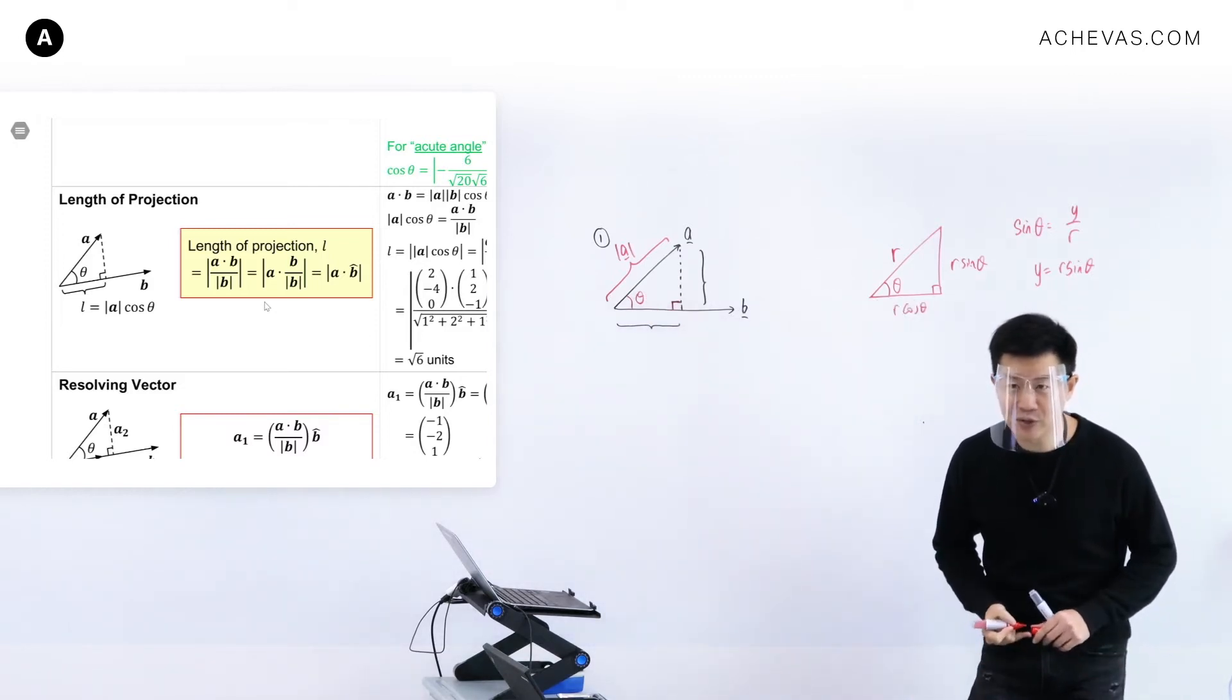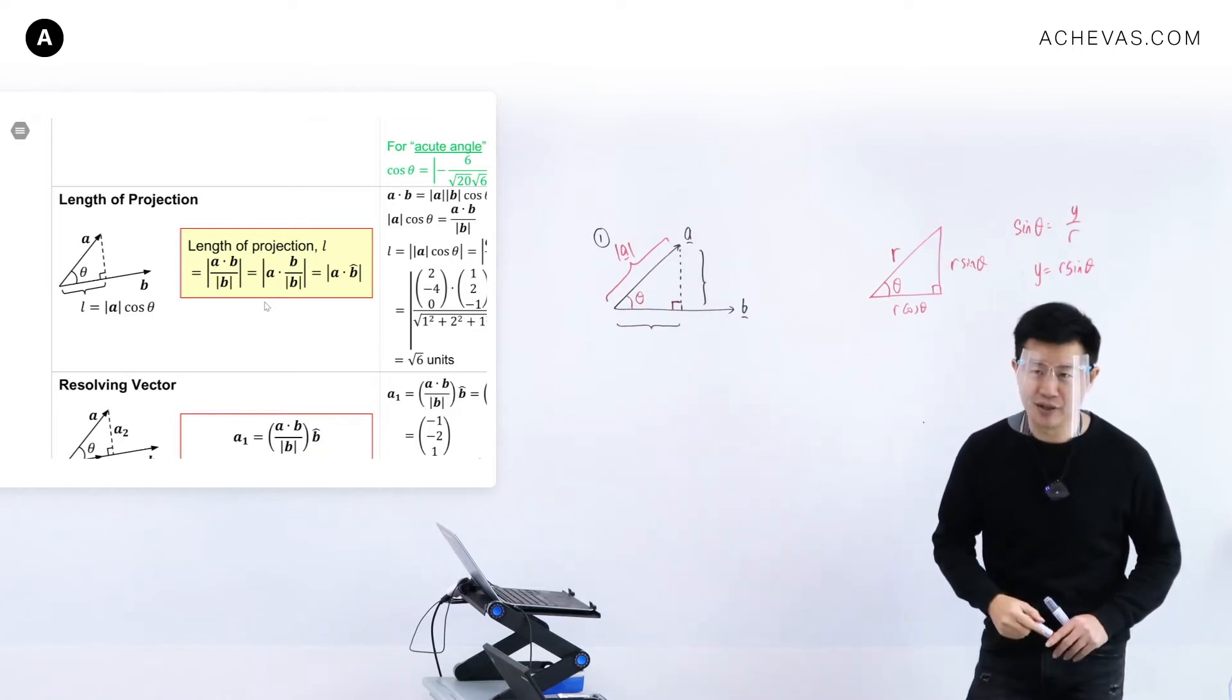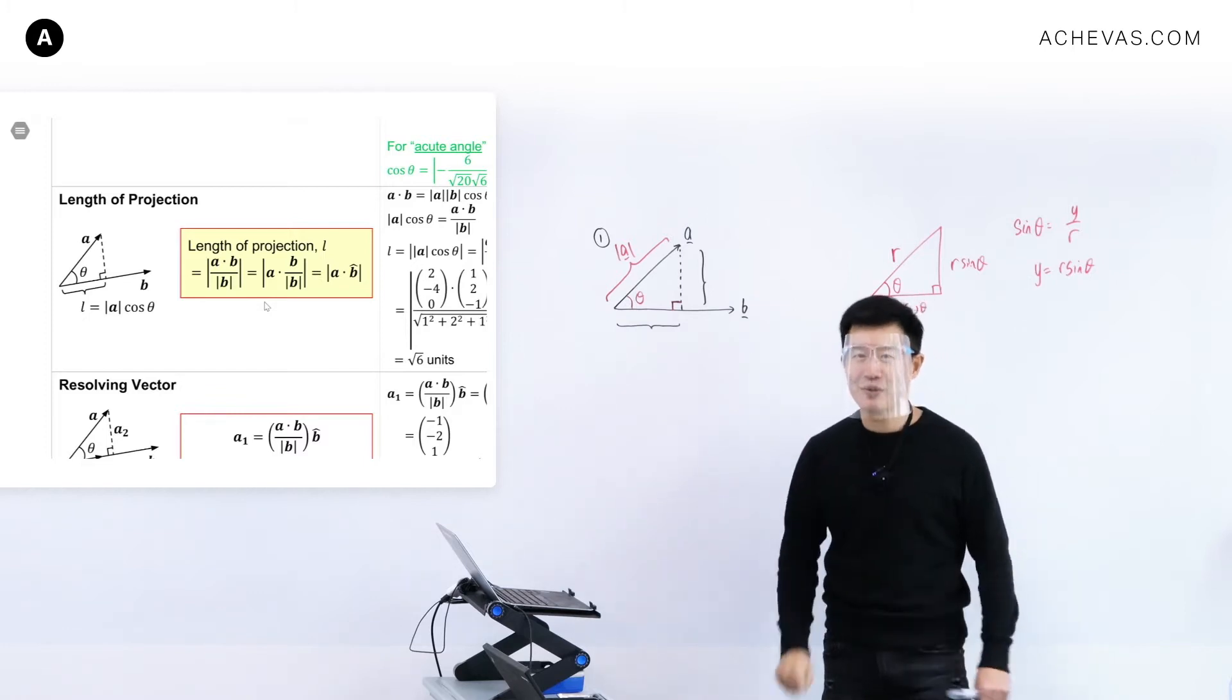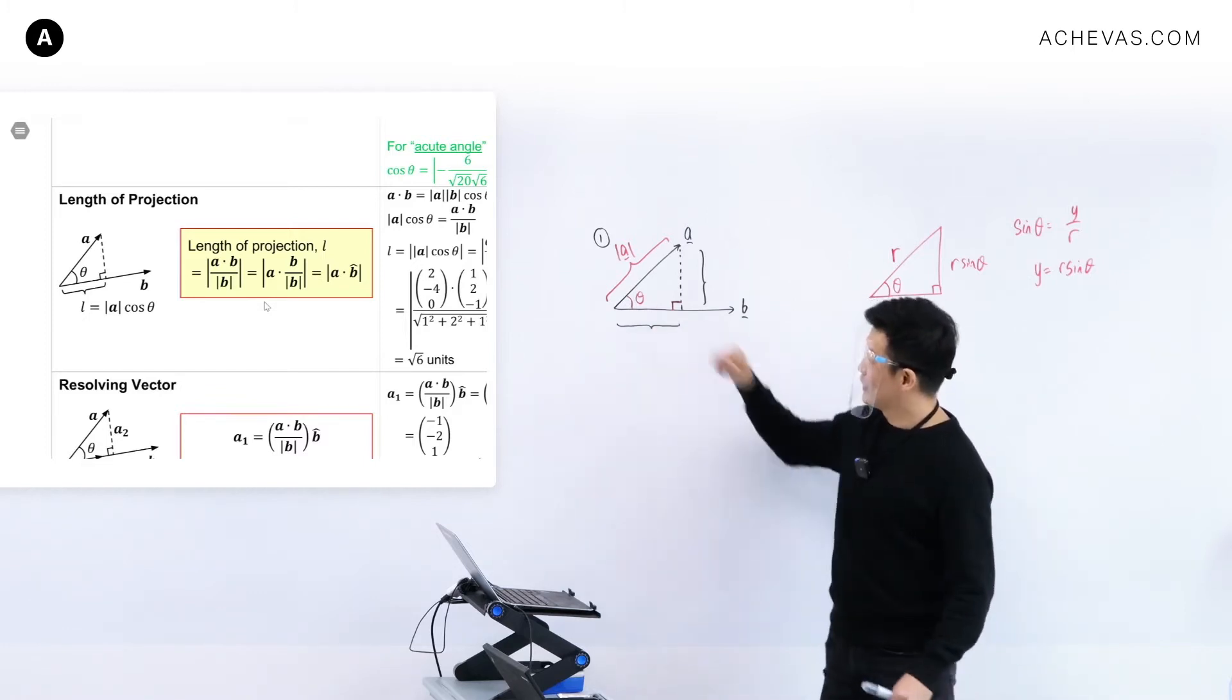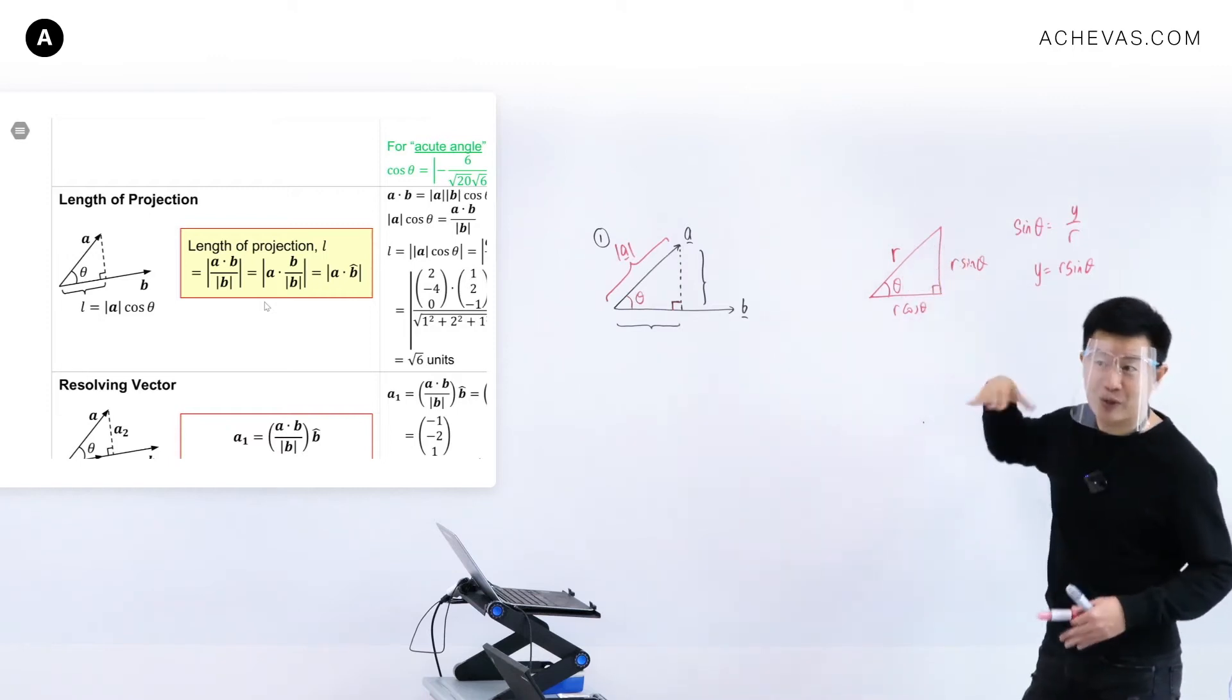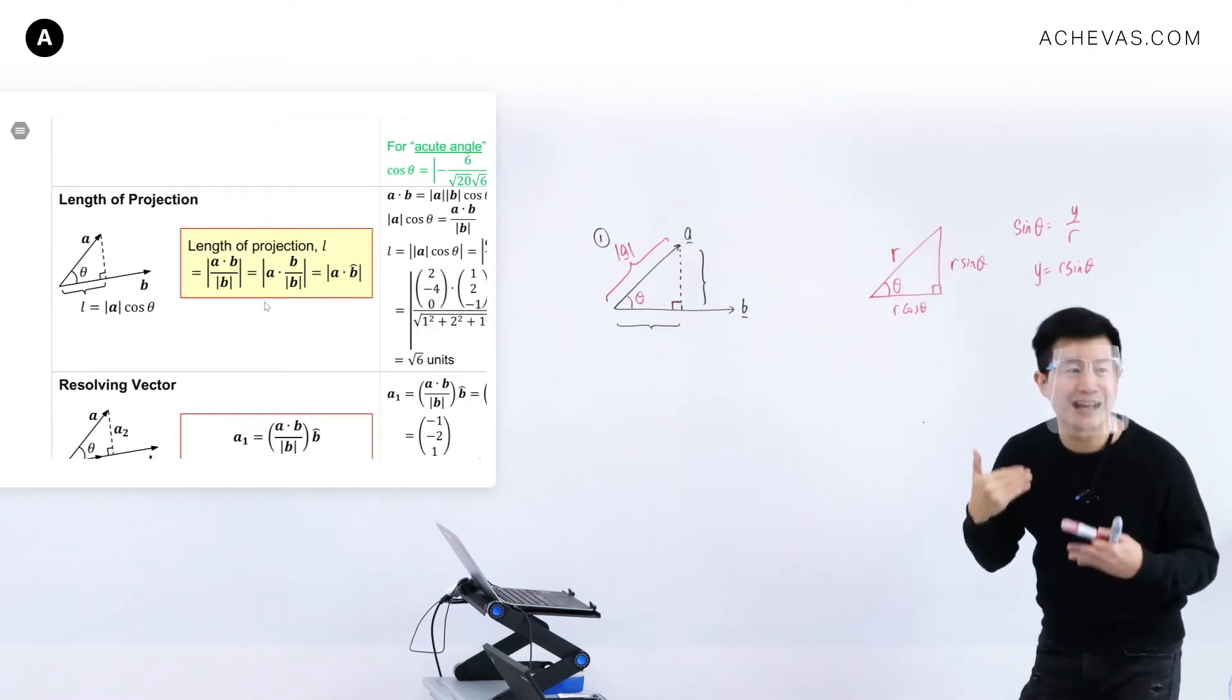Can I work out this value of theta? I cannot because I have dot product and cross product, correct? I use dot product or cross product, I can actually find this value of theta. But let's say we suppress that urge to find this. And I just want to use whatever that I can visualize, whatever that I already know.